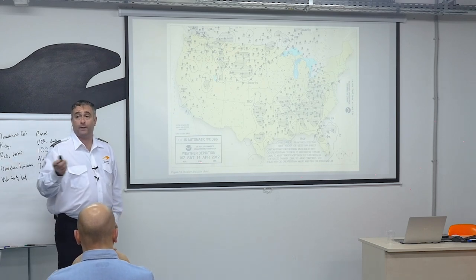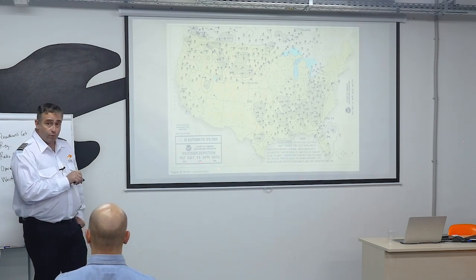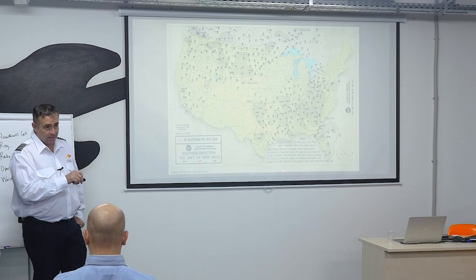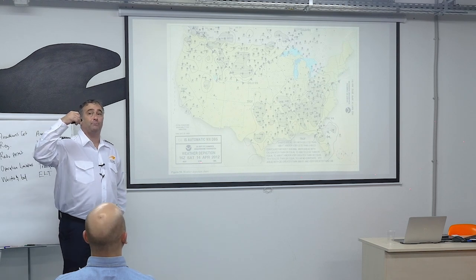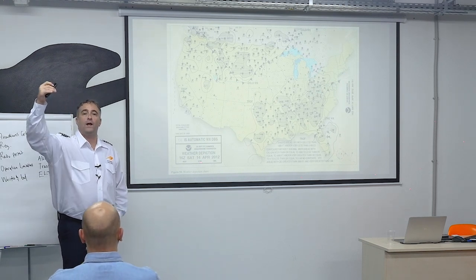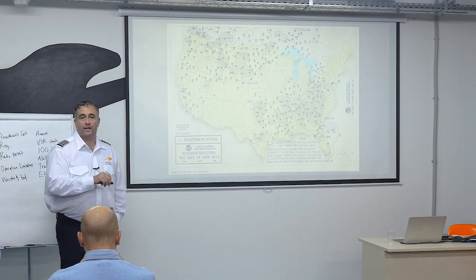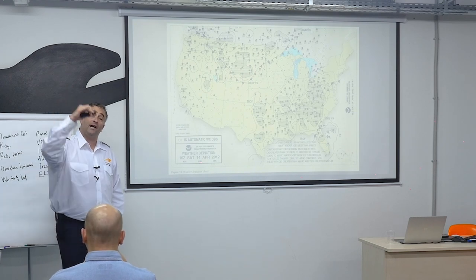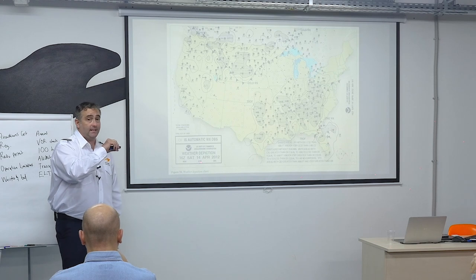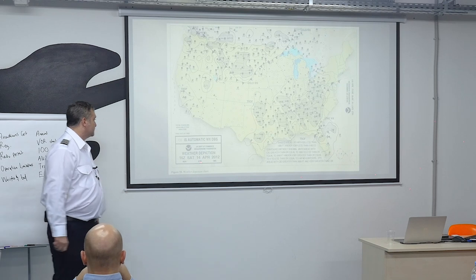One other interesting tidbit about these charts: they'll always have the name of the chart, the issue time, the effective time if it's different from the issue time, and also the pressure level associated with it — where does this chart start and end. This one is two-dimensional and on the surface. If it has some sort of depth to it, it'll describe right on the chart where it starts and where it ends.